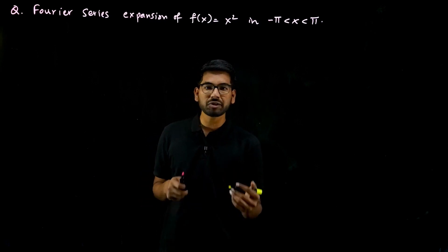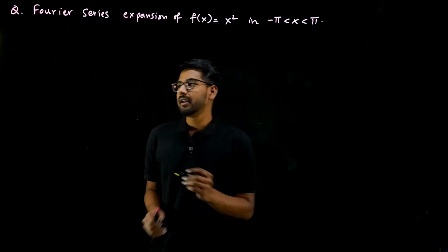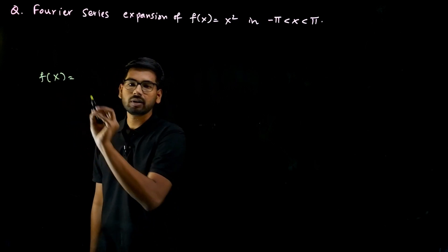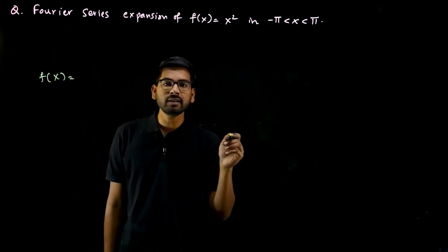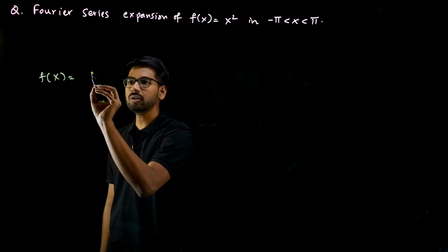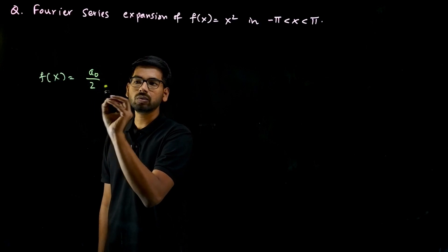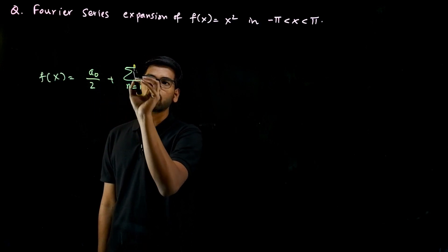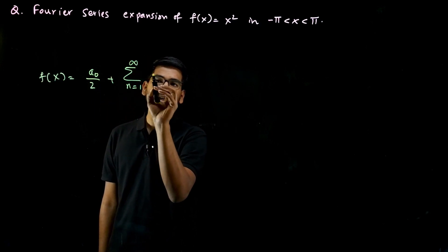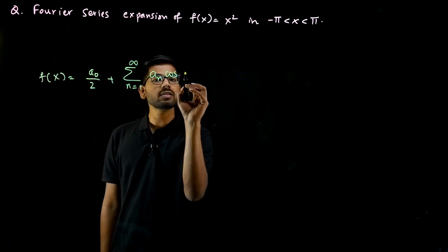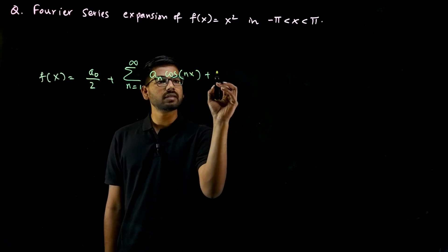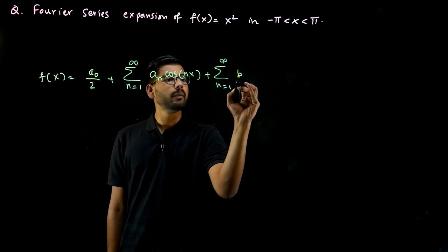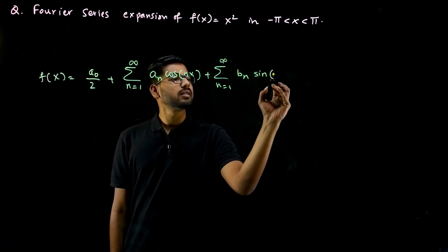So what is Fourier series expansion of f of x? It is writing f of x in terms of cosine and sine harmonics. So f of x is equal to a naught by 2, plus summation from n equal to 1 to infinity of aₙ cos nx, plus summation from n equal to 1 to infinity of bₙ sin nx.